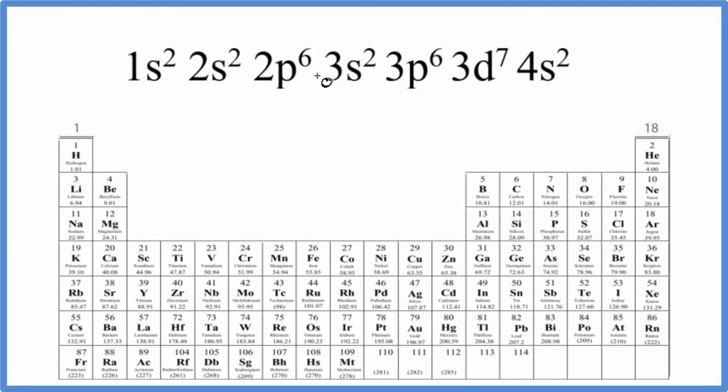There are two main ways to figure out which element is represented by this electron configuration here ending in 3d7 4s2.